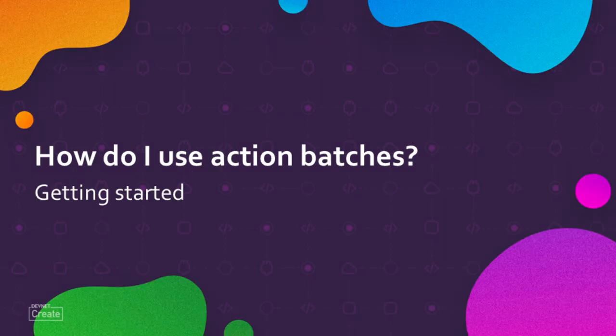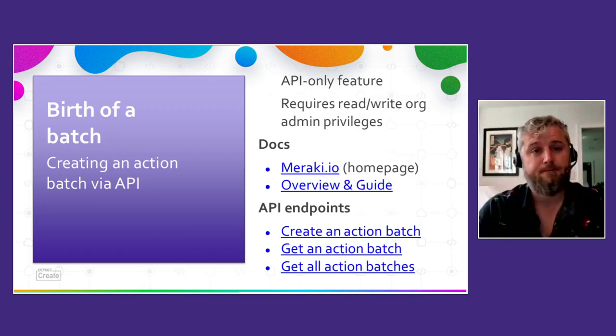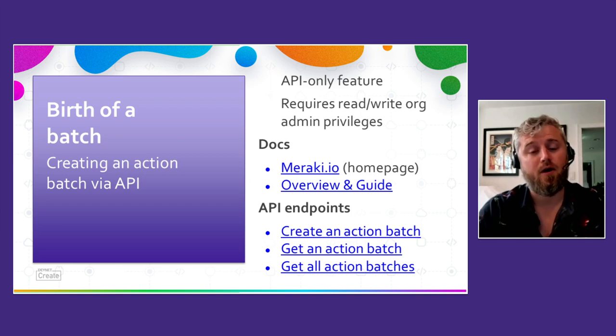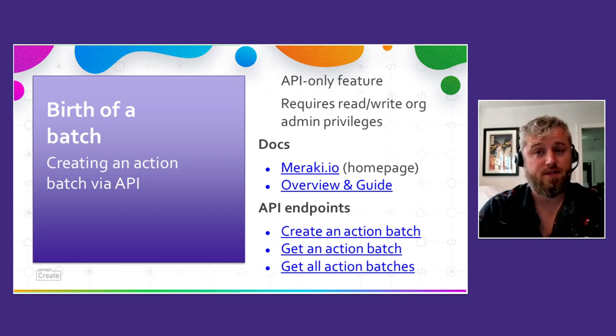Next, let's answer how you can get started with action batches. Action batches are an API-only feature — you will not find them in the dashboard GUI. To create them, you will use the dashboard API, and you will need read-write organization admin privileges. An overall guide and detailed documentation are available on our documentation site, meraki.io. The key endpoints we'll leverage today are those that create and then return the action batches so we can check on the status.